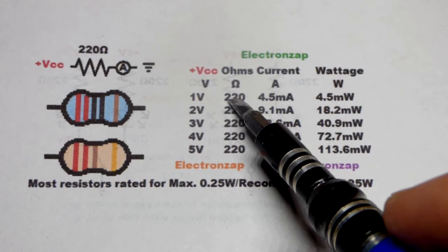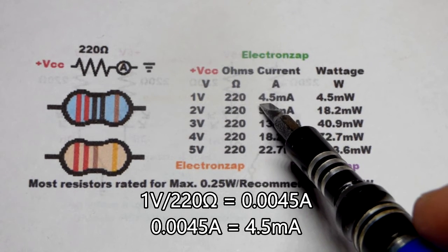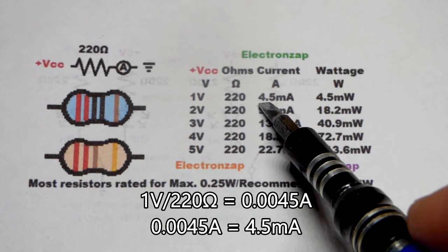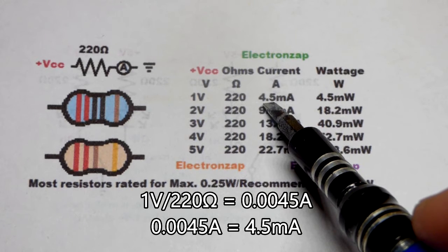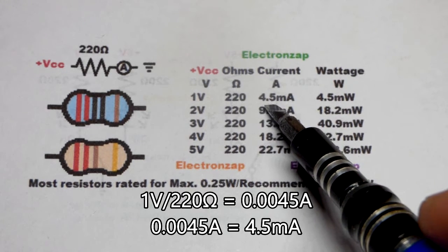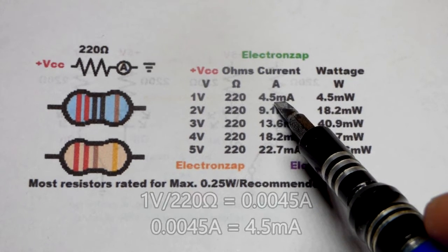But it gives you the current in amps. I already converted that. Because usually people talk about at these lower currents milliamps. So 1 divided by 220 is about 0.0045. I rounded this off, which is the same as 0.0045 amps, which is the same as 4.5 milliamps right there.